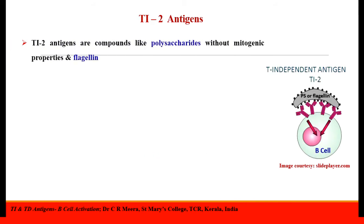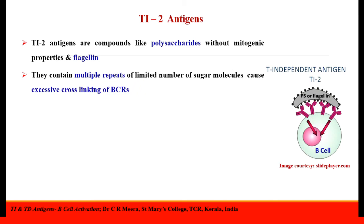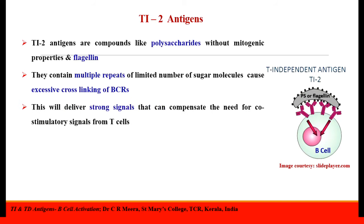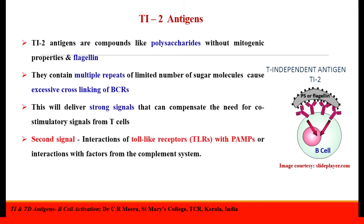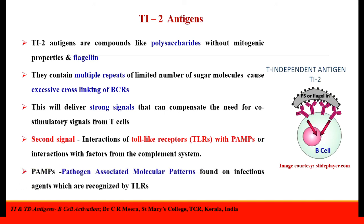Ti2 antigens are compounds like polysaccharides without mitogenic properties, and also flagellin. They activate B-cells in a different way. They contain multiple repeats of a limited number of sugar molecules which cause excessive cross-linking of B-cell receptors. This delivers strong signals that can compensate the need for co-stimulatory signals from T-cells. In this case, the second signal can be interactions of Toll-like receptors with PAMPs, or interactions with factors from the complement system. PAMPs are pathogen-associated molecular patterns found on infectious agents, which are recognized by Toll-like receptors.